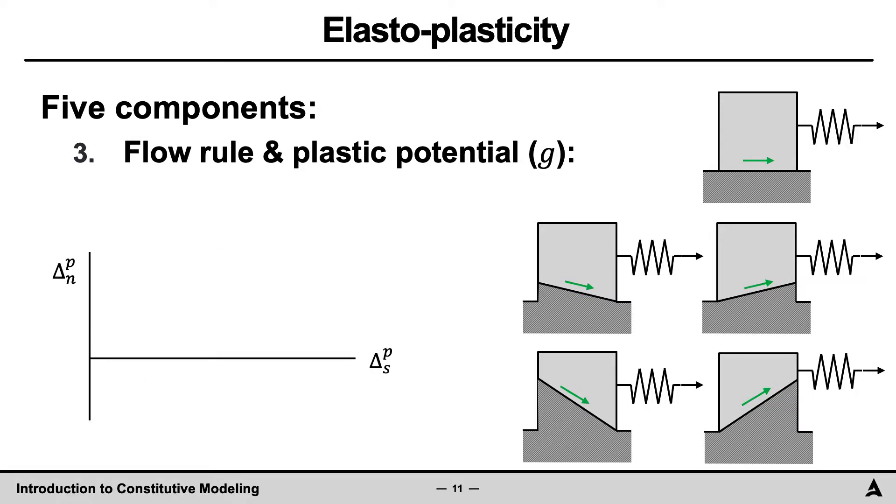What we have just observed in terms of plastic flow can be described mathematically by first creating a plot where the horizontal axis represents the plastic displacement in the shear direction, and the vertical axis represents the plastic displacement in the normal direction. With these axes set, we may now add on this plot the green vectors associated with the five blocks to the right. And we may now add a function that is a curve perpendicular to all five vectors. This line is shown in red and is termed the plastic potential g. In defining this curve, the flow rule is used to state that the plastic flow, delta p, is perpendicular to the plastic potential g.